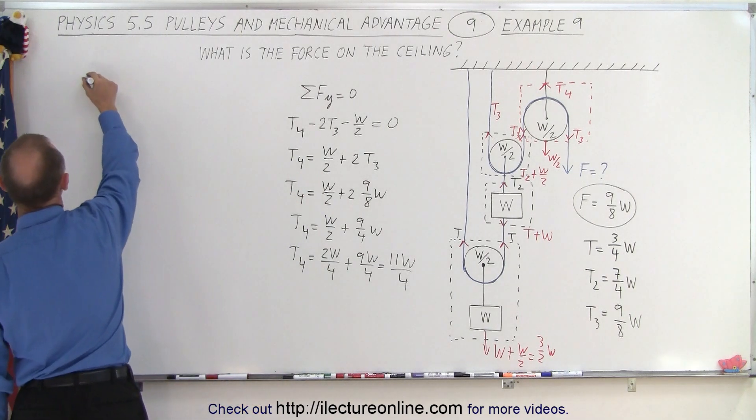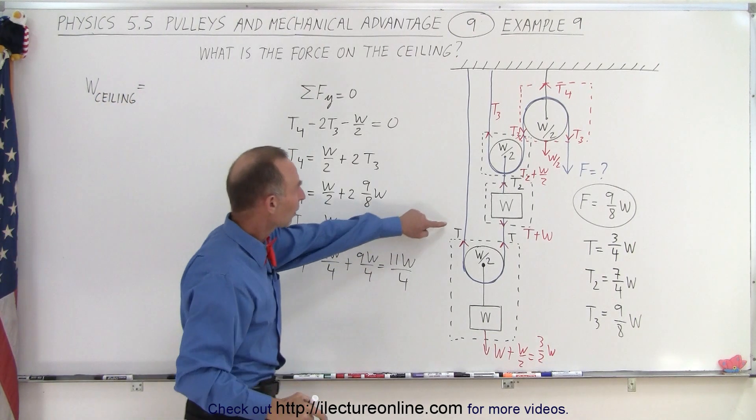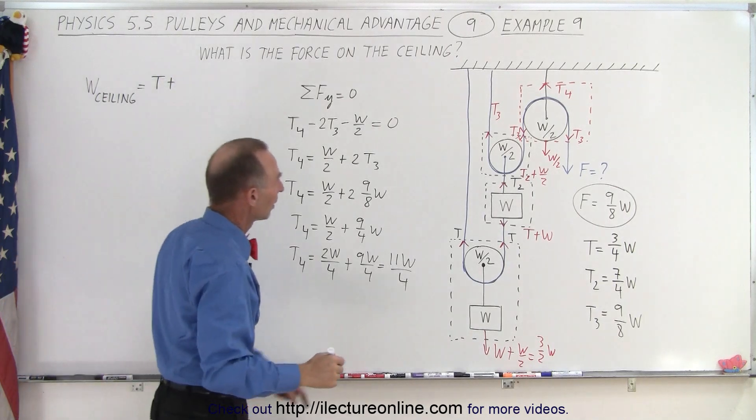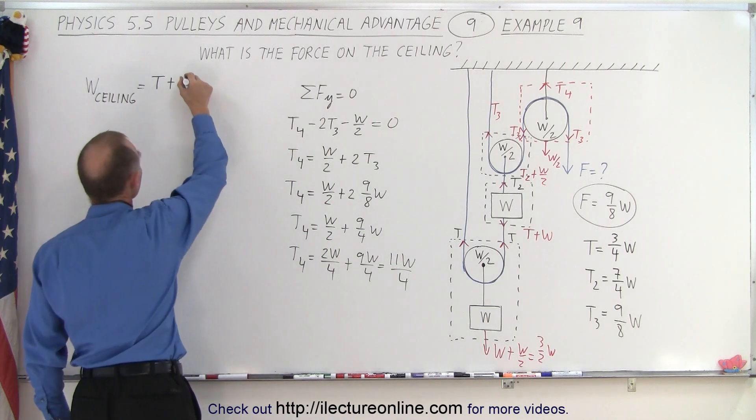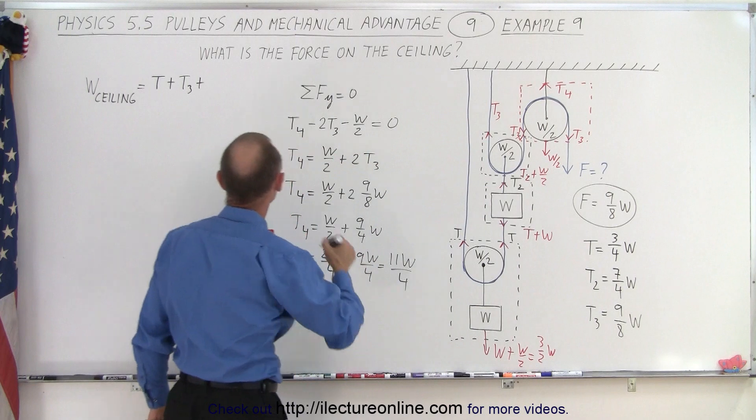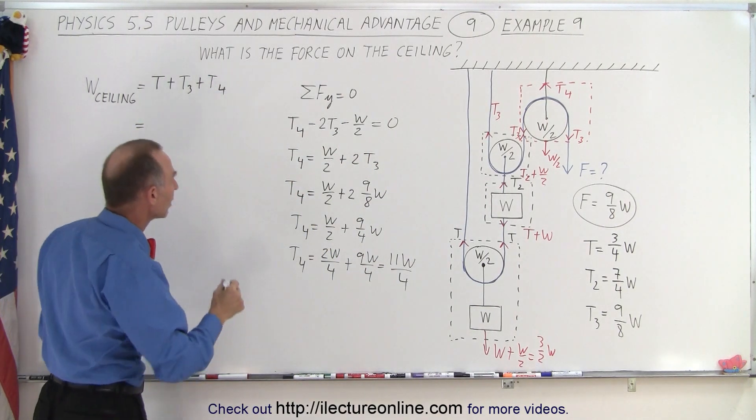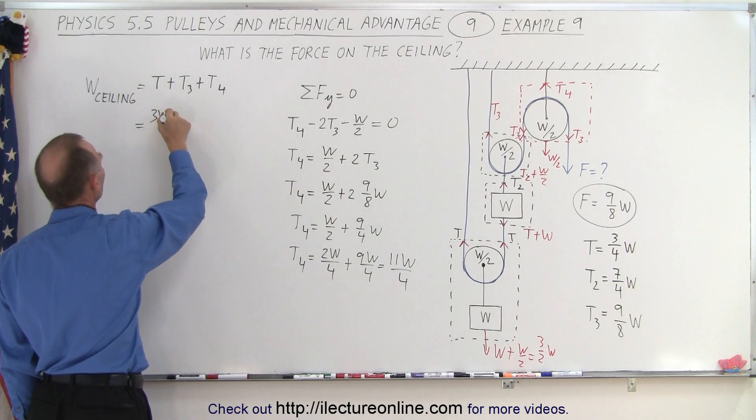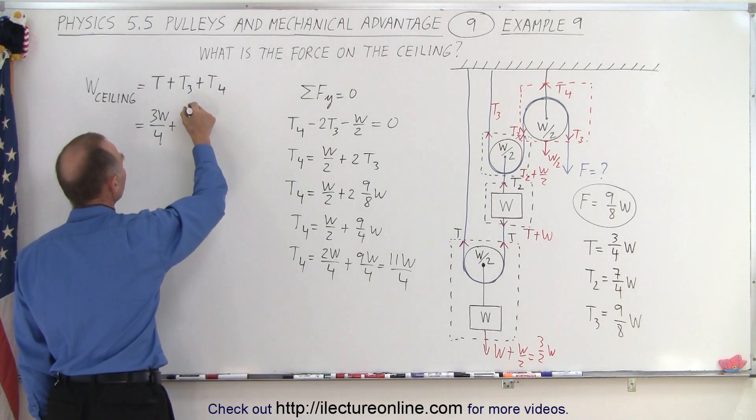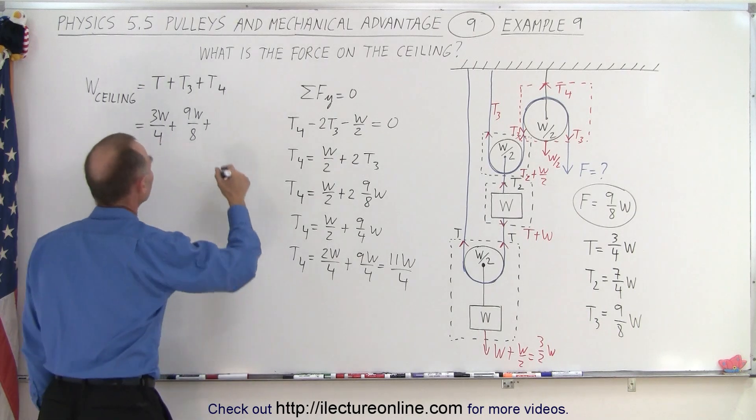And we can then say that the weight on the ceiling is now going to be equal to the tension T on this string, plus tension T3 on this string, plus tension T4 on that string. And so that is equal to tension T, which is 3W over 4, plus tension T3, which is 9 over 8W, plus tension T4, which is 11 over 4W.